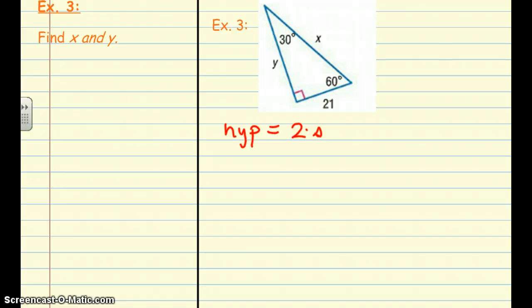Where's the short leg? It's the one opposite the 30-degree angle. So in this case, the hypotenuse is 2 times 21, which is 42, and our hypotenuse is x.